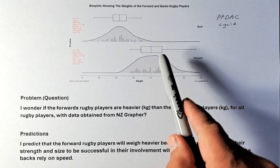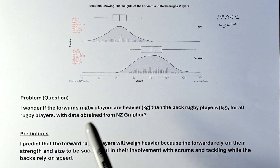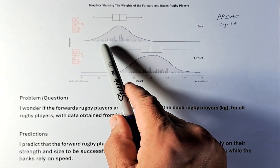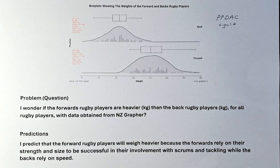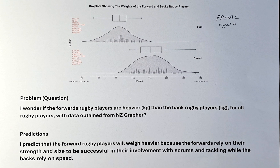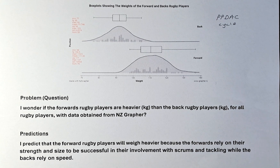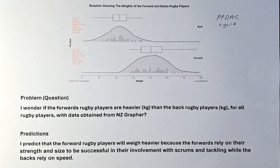We have a box and whiskers plot, and at the same time we have a dot plot — two graphs in one. We are going to give the problem, write the question, followed by giving the plan, then how we are going to collect the data, then analyse, and finally conclude.